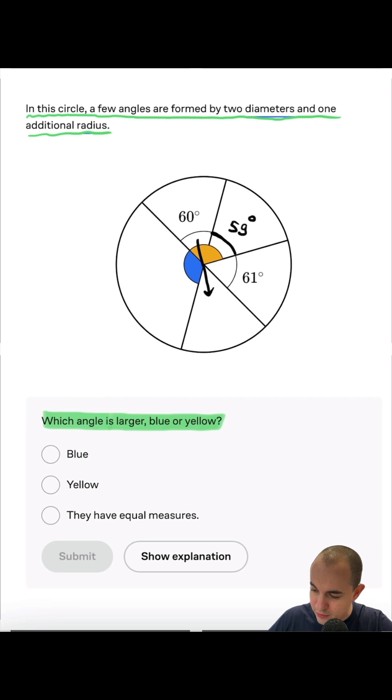Then we can easily tell that these two angles are vertical. That's why they're the same. It means 60 degrees both.